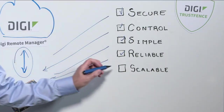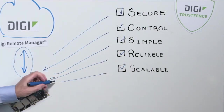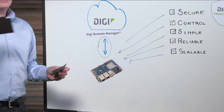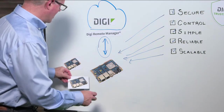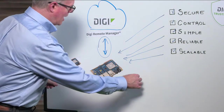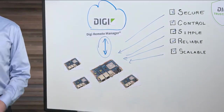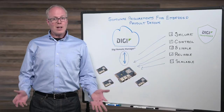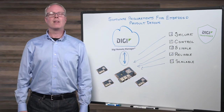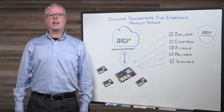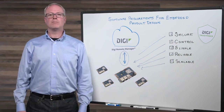Finally, number five, you want all of this to be scalable. It should be easy to manage a large number of devices and add more over time. That's it — the top five software requirements for embedded product design. Thanks for tuning in and look for other great videos like these at digi.com.